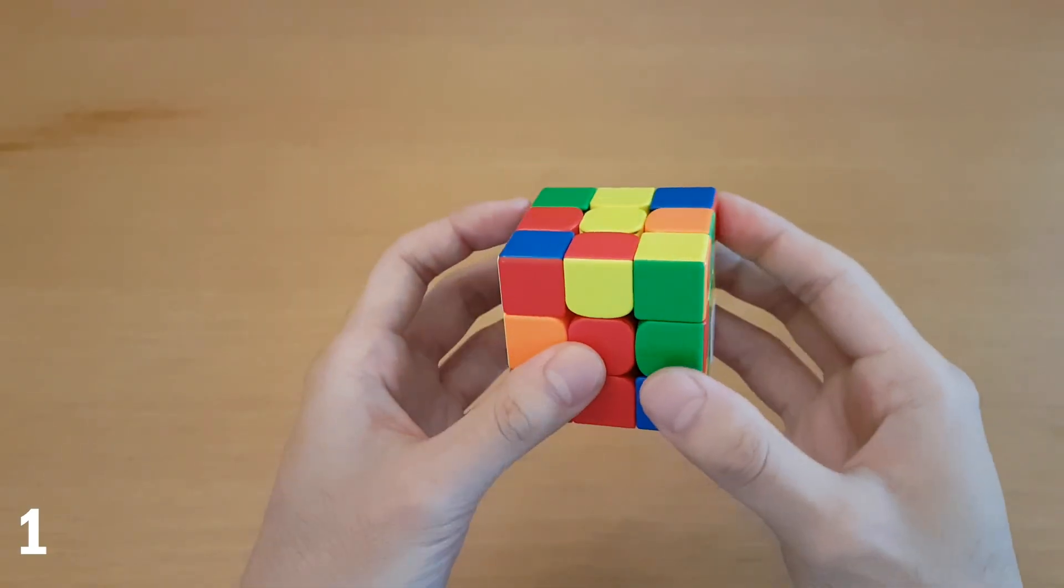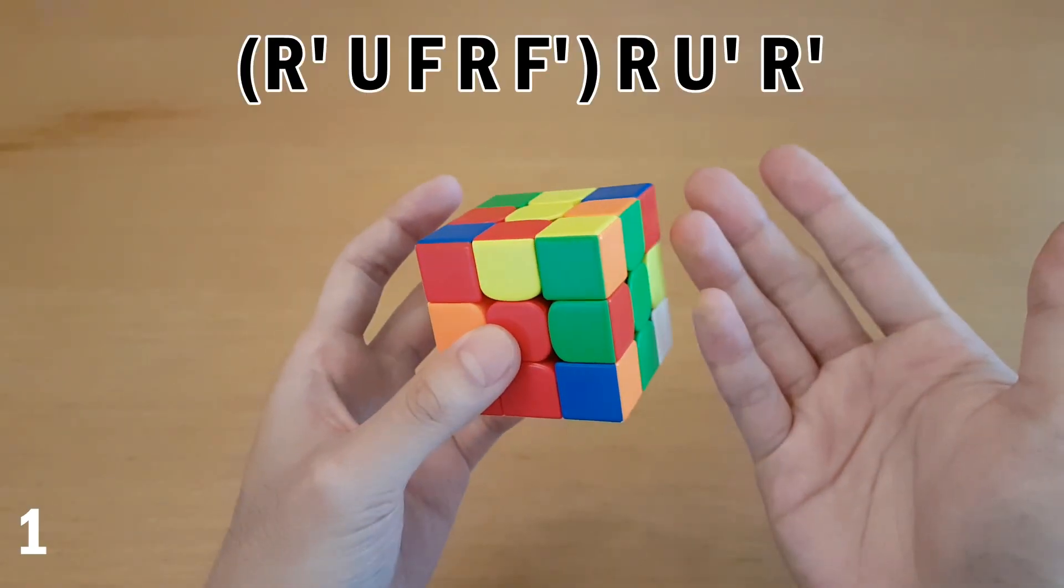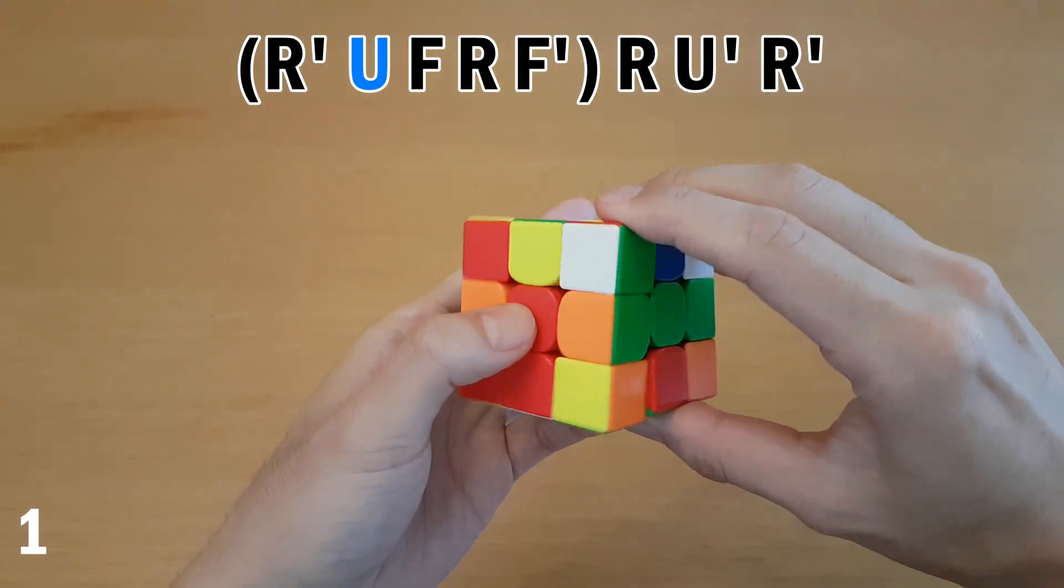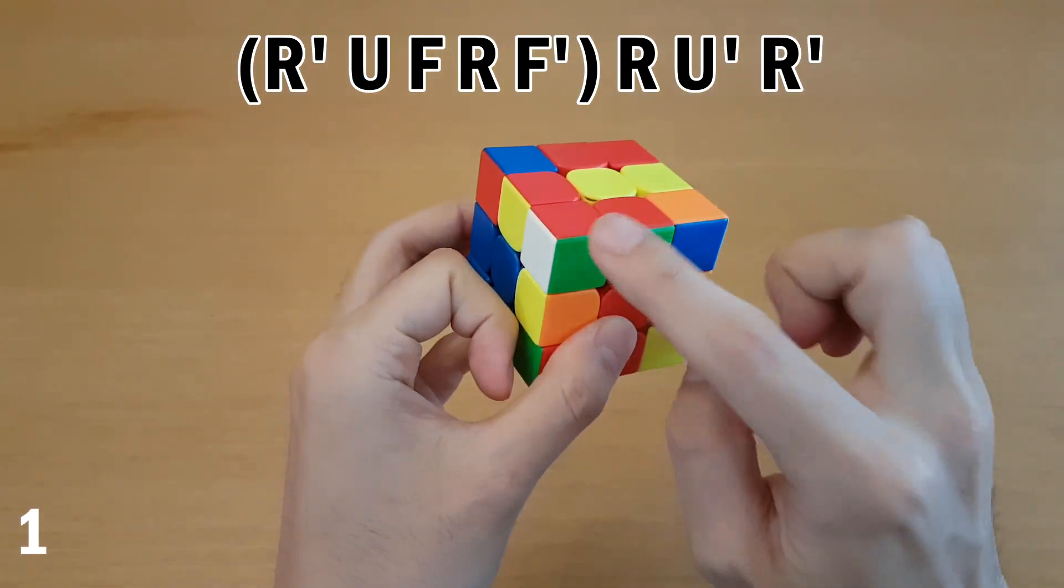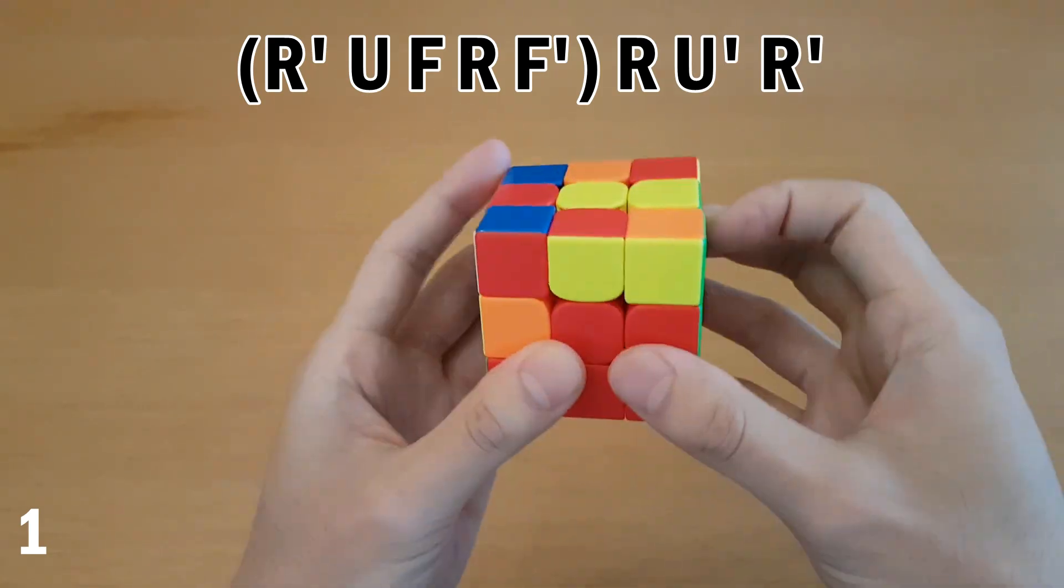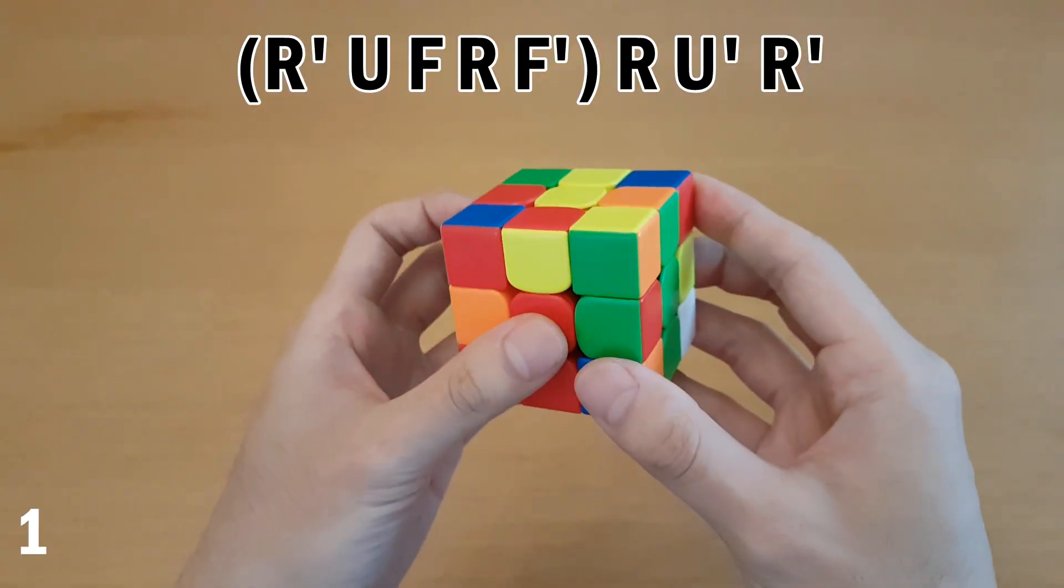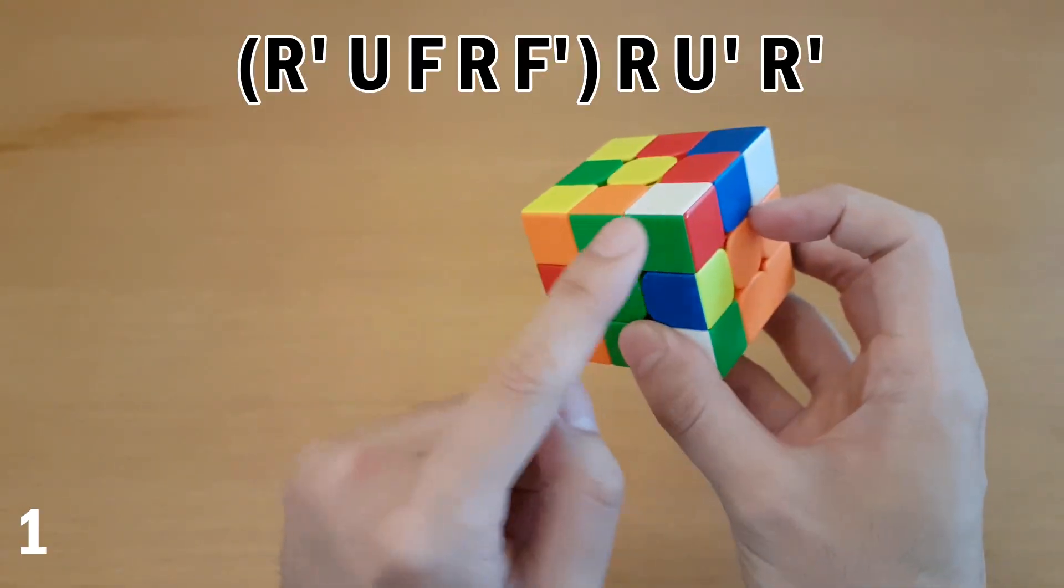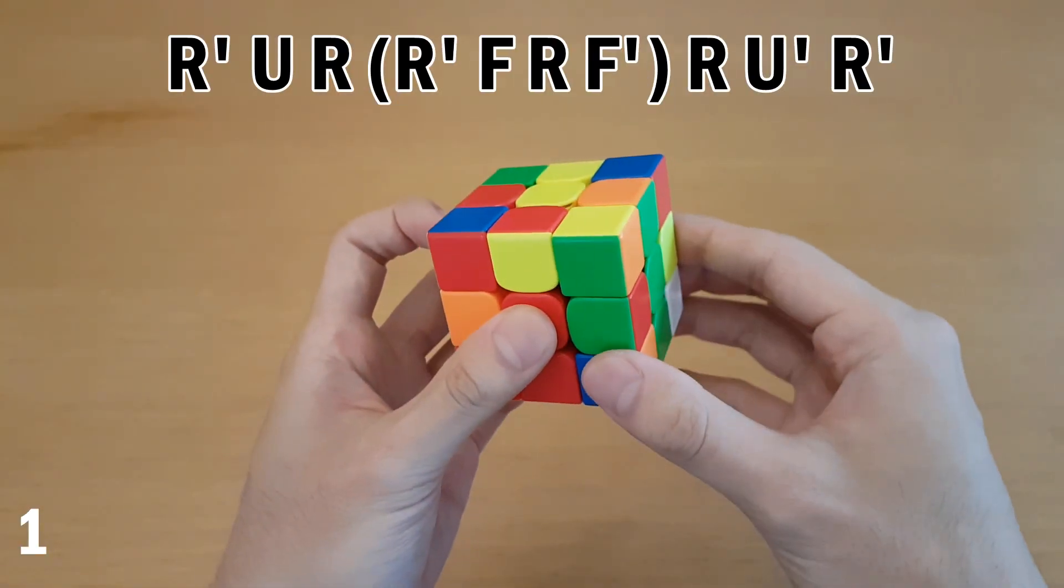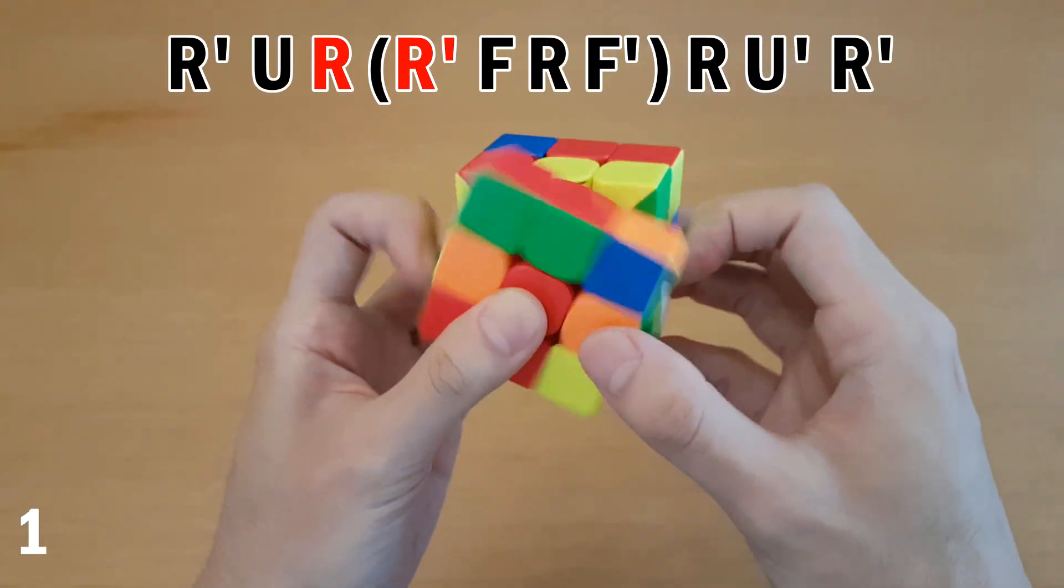So for this case what we do is sledgehammer but insert an extra U move as the second move. So like this and then U with your left hand and then finish the sledge and then insert this pair. The reason this algorithm works, you may notice it as being very similar to the solution for this, which is just the same thing without the U move. The reason is just because we're taking it out and canceling into the sledge.